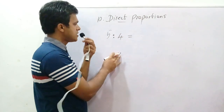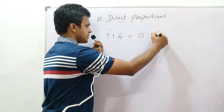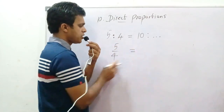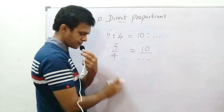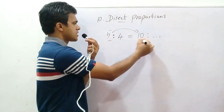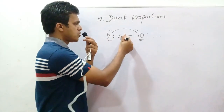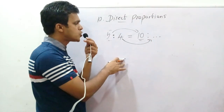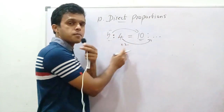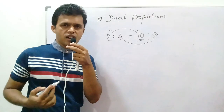Now, here is a direct proportion problem: 5 to 4 equals 10 to blank. This means 5 over 4 equals 10 over blank. What is the relation between the two digits? 5 is multiplied by 2 to get 10, so 4 is also multiplied by 2, giving 8. The answer is 8.